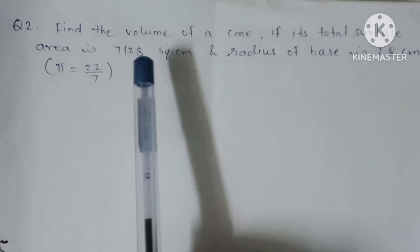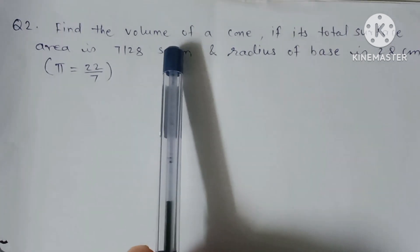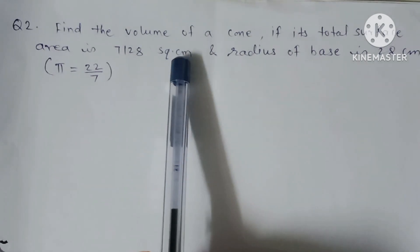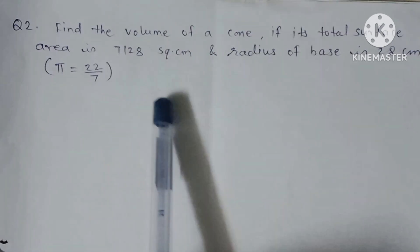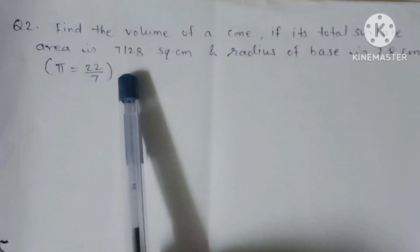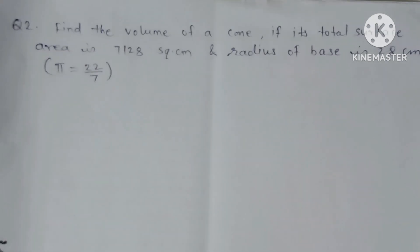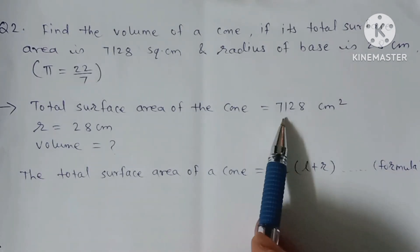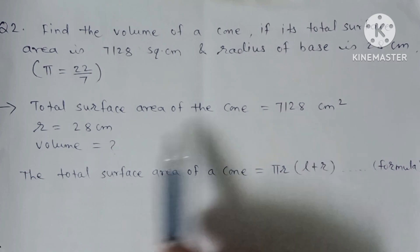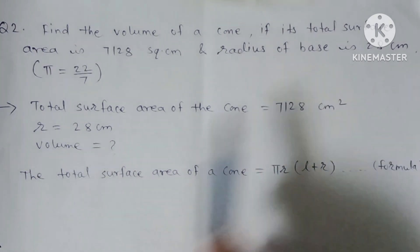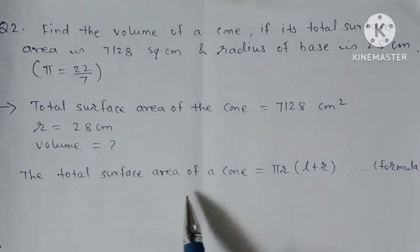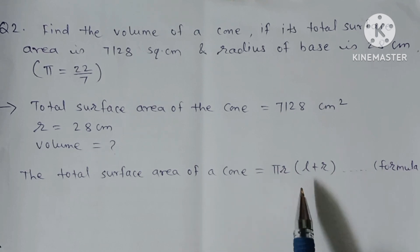We need to find the volume of the cone. The formula for volume is (1/3)πr²h. The value of h is not given, but the total surface area is given. Using the total surface area, we will first find the value of l (slant height), and then use that to find h, and finally find the volume. Given: total surface area = 7128, radius = 28 cm. The total surface area of a cone = πr(l + r).